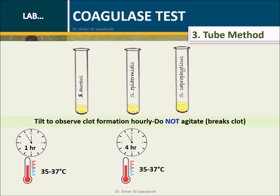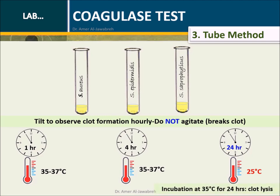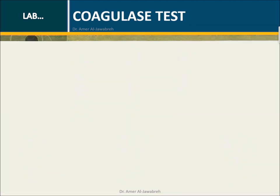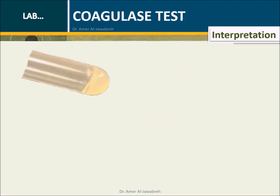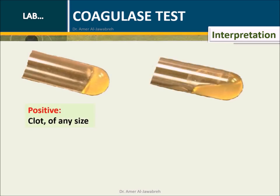Do not agitate, as the clot will break. If after 4 hours no clot is formed, incubate for 24 hours at 25 degrees centigrade. Do not leave the test at 35 degrees centigrade for more than 4 hours, since fibrinolysin and staphylokinase will lyse the clot. Interpretation: A clot of any size indicates a positive result; no clot indicates a negative result.